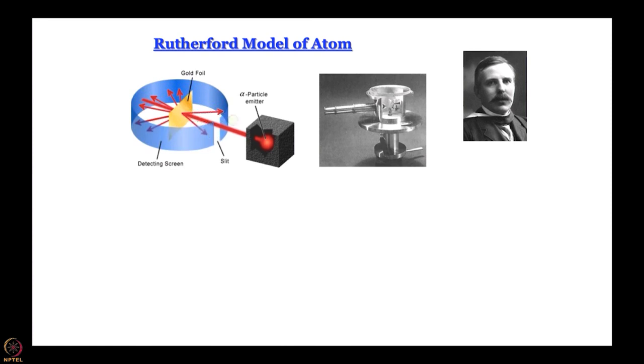One out of twenty thousand alpha particles turned almost 180 degrees back. It was said this was as surprising as shooting a cannon shell at tissue paper and having it come back and hit you. It was Marsden's courage not to neglect this seemingly negligible result — he walked up to Rutherford and reported what he saw. And it was Rutherford's greatness that he did not dismiss it as a freak observation; Rutherford took it seriously.